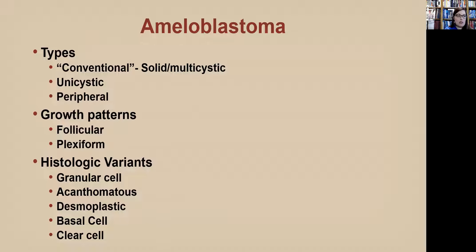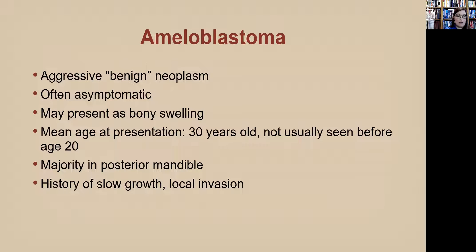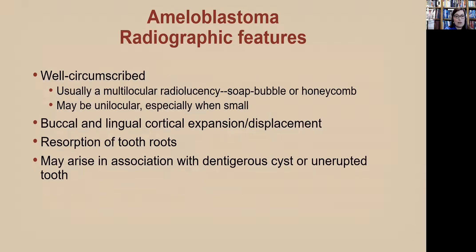With ameloblastoma we have several types — different growth patterns and histologic variants. Ameloblastoma is a benign neoplasm, though it can be aggressive. It's usually asymptomatic, presenting as a bony swelling, and the mean age of presentation is about 30 years. We usually don't see it before age 20. The classic anatomic location is the posterior mandible angle, presenting with a history of slow growth but it is locally invasive in nature.